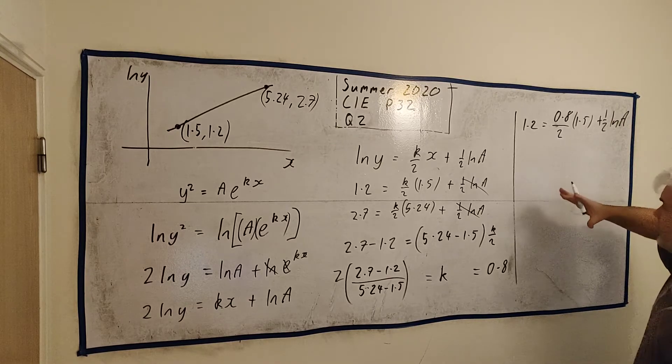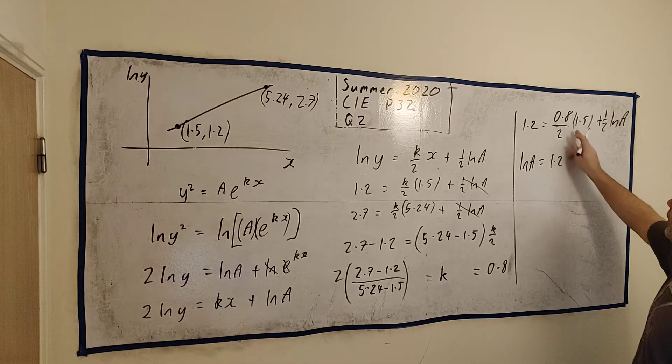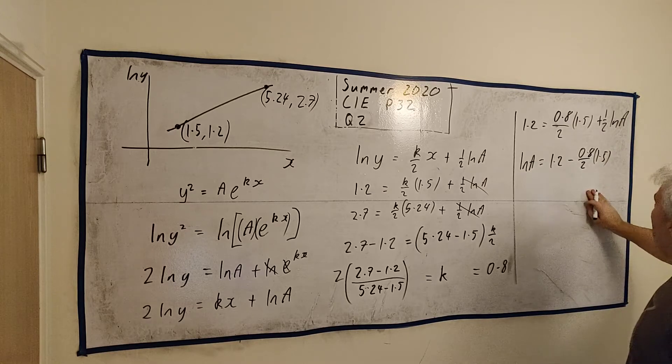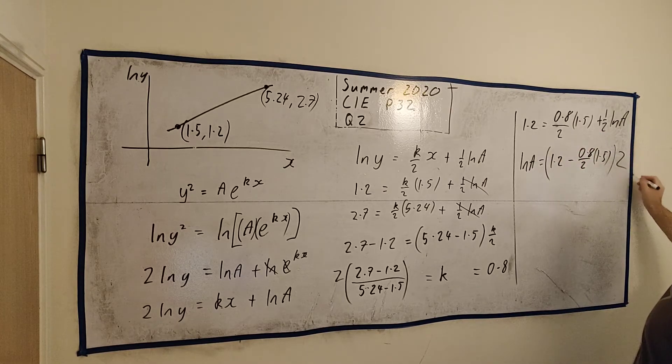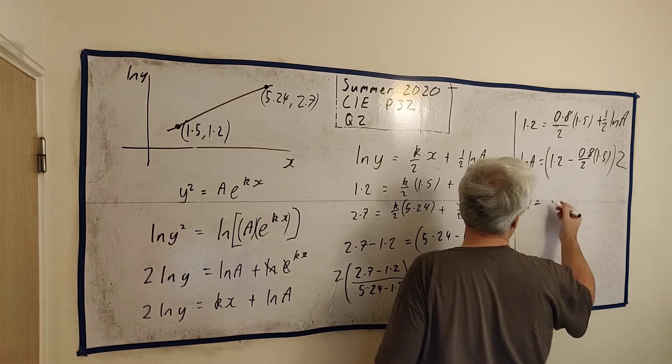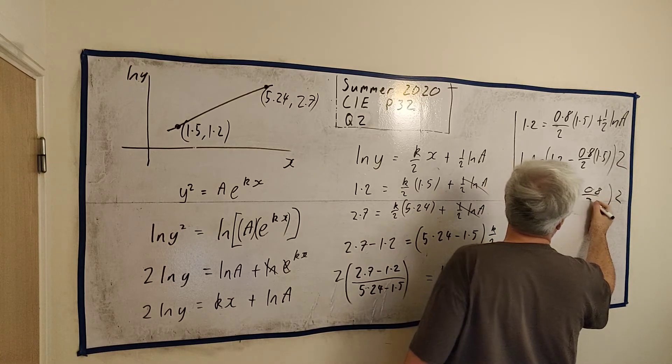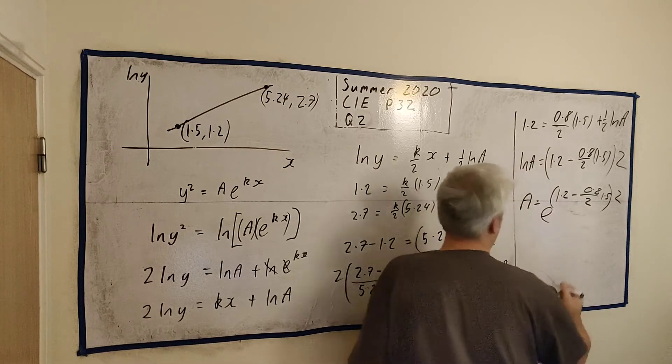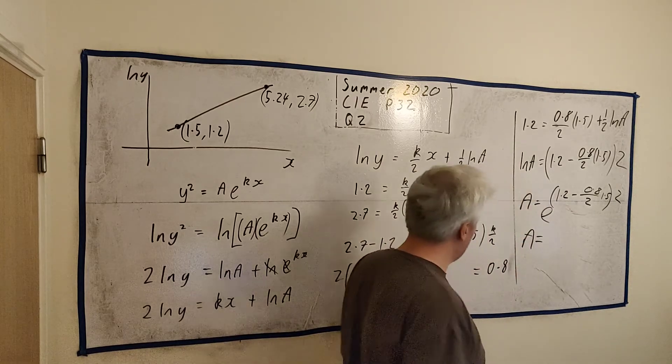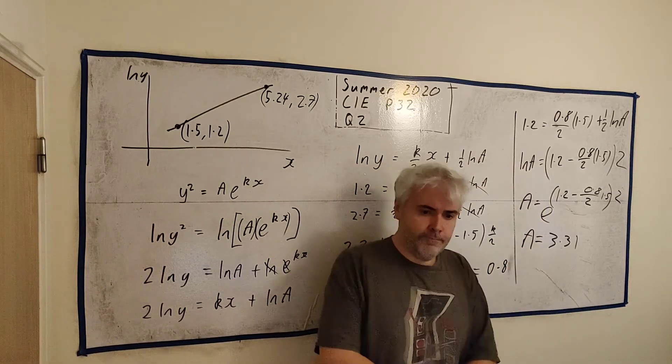I can put that in a calculator in a moment. So that means A is equal to, well this whole thing times 2, I'll write it all in, 1.2 minus 0.8 over 2 multiplied by 1.5, all e to the power of all that. And again I'd go ahead and put down a calculator. Now I'd like to use calculator just once, and I would get 3.31.